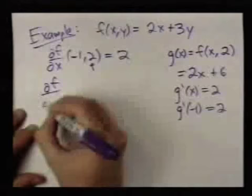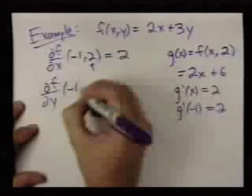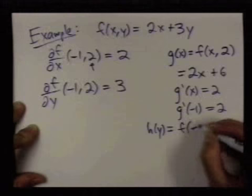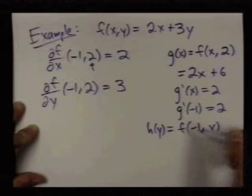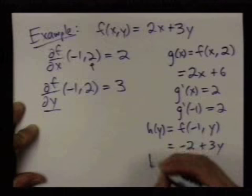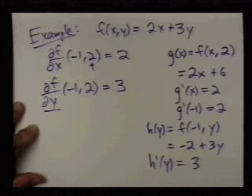And you can check for yourself. If you go through the same type of process to find the partial with respect to y, you'll get that this is 3. Namely, if I define h of y equals f of negative 1 comma y. So I'm holding the x values constant and letting the y values change when I compute partial with respect to y. This gives me negative 2 plus 3y. And the derivative of this, just as a function of one variable, is 3. And so its value when y is equal to 2 is 3, like I said.